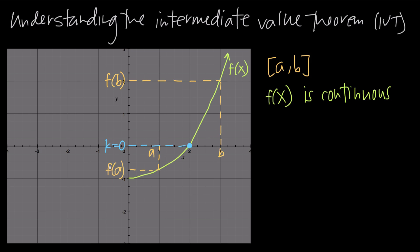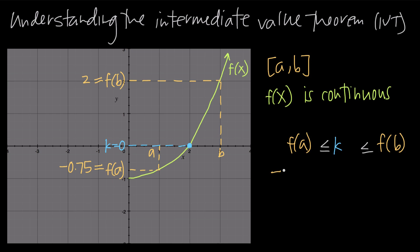For example, suppose f of a is negative — here it looks like about negative 0.75 — and f of b is positive, here about 2. The Intermediate Value Theorem tells me the function has to equal 0 at some point, because I can pick k equals 0: 0 is greater than a negative number and less than a positive number, so k equals 0 satisfies f of a ≤ k ≤ f of b, and the theorem guarantees a point x equals c inside the interval where the function equals 0.